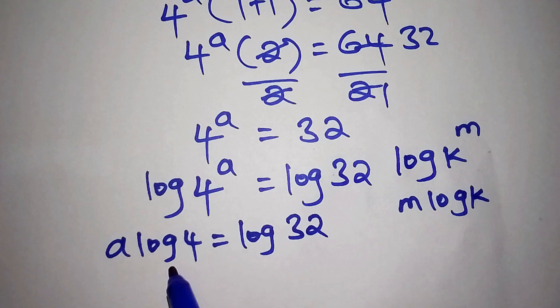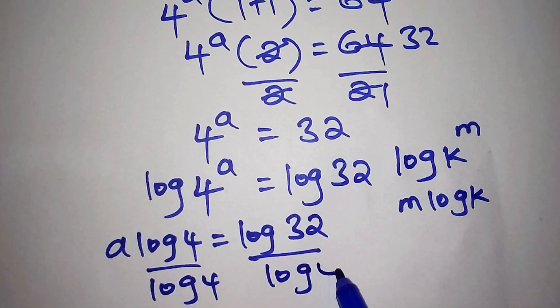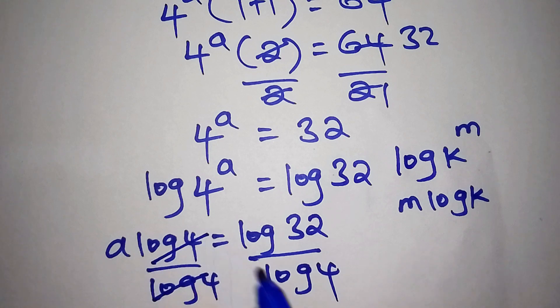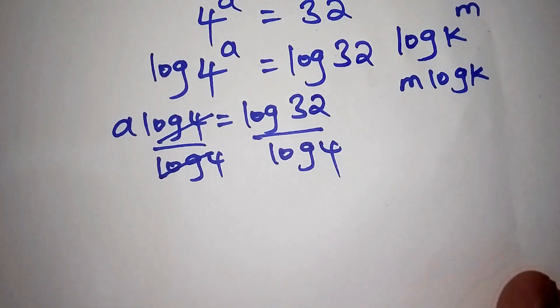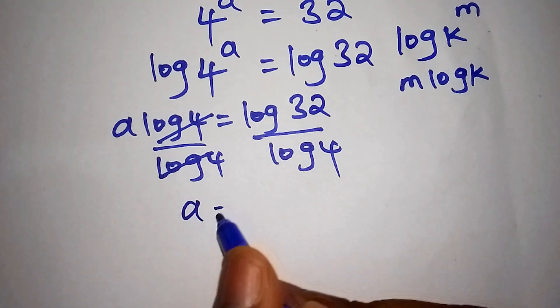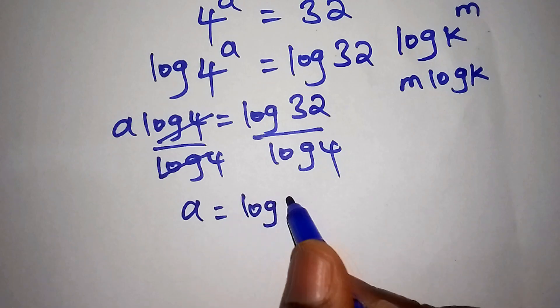Now divide both sides by the log of 4, so that we remain with a on one side. Log 4 and log 4 cancel, so the value for a is equals to the log of 32 divided by the log of 4.